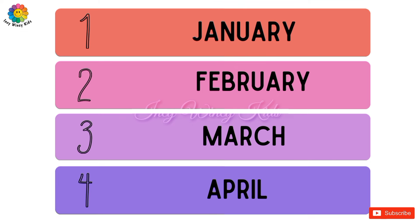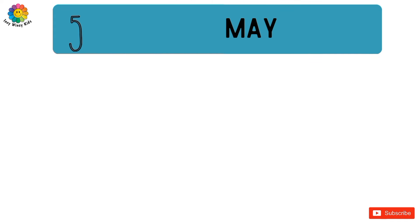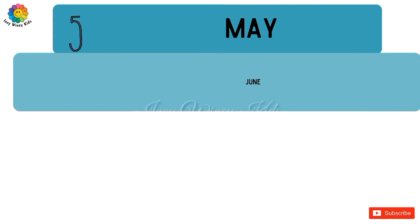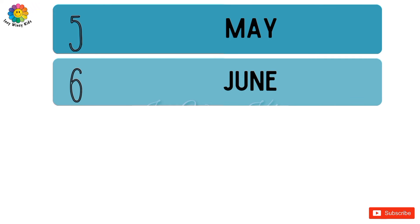The fourth month is April. The fifth month is May. The sixth month is June.